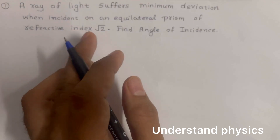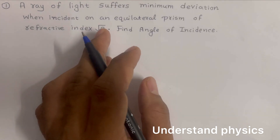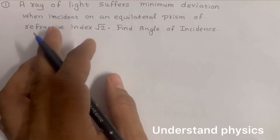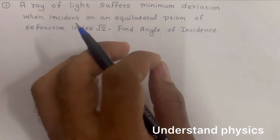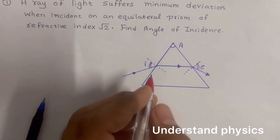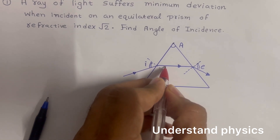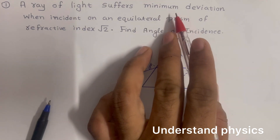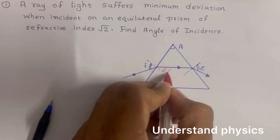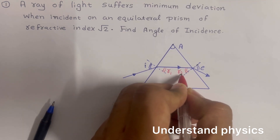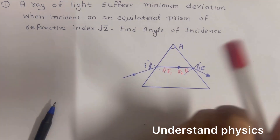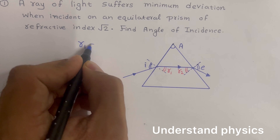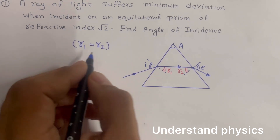In this problem, it is given that the ray of light is suffering minimum deviation. To understand what happens during minimum deviation, we draw a diagram. During minimum deviation, the angle of incidence and angle of emergence are equal. Also, r1 and r2 angles are equal. Since minimum deviation is given, we take r1 equal to r2.